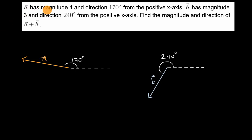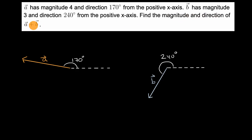We're told that vector A has magnitude four in direction 170 degrees from the positive x-axis. Vector B has magnitude three in direction 240 degrees from the positive x-axis. Find the magnitude and direction of vector A plus vector B.